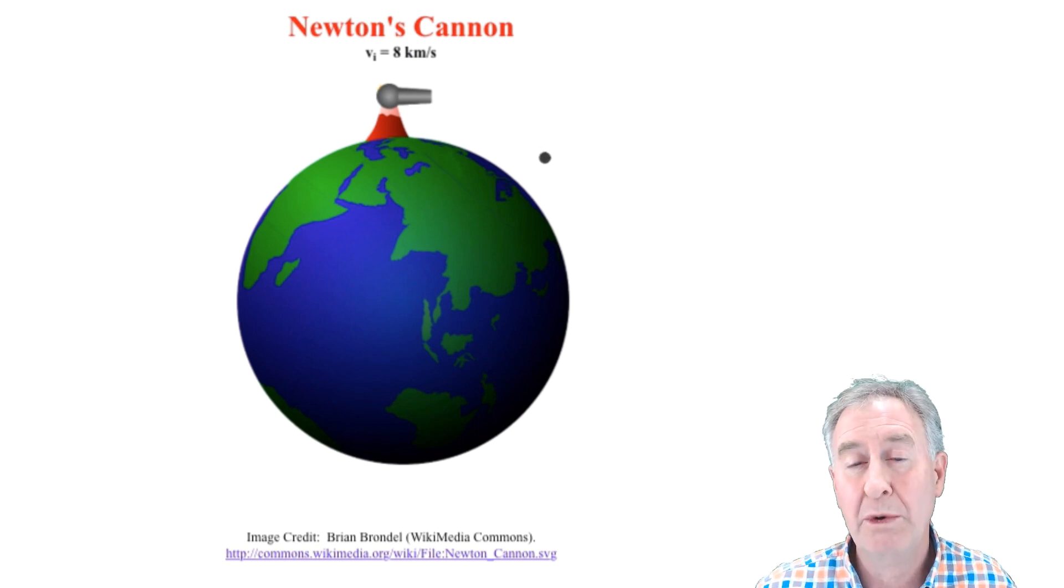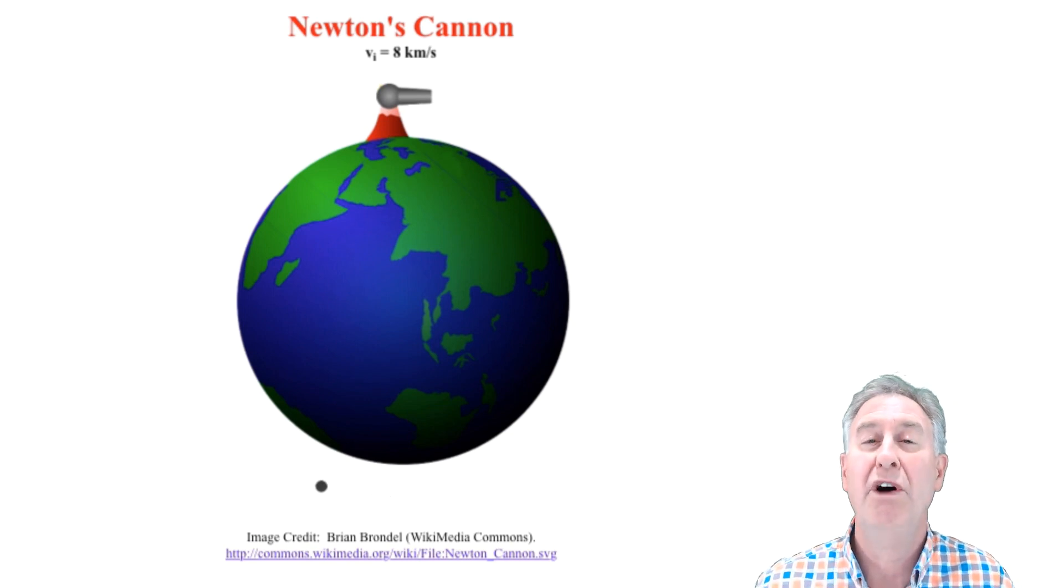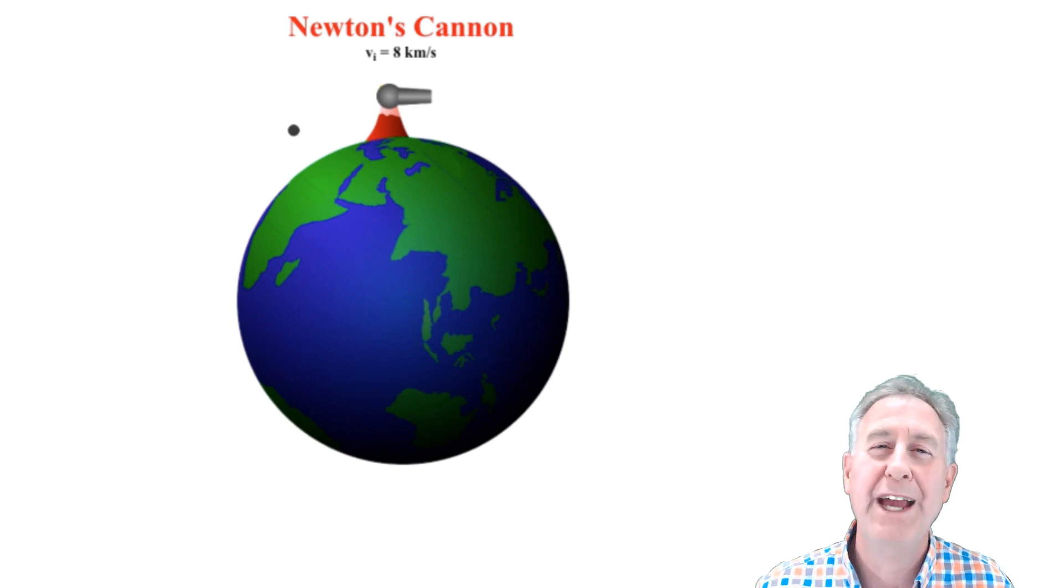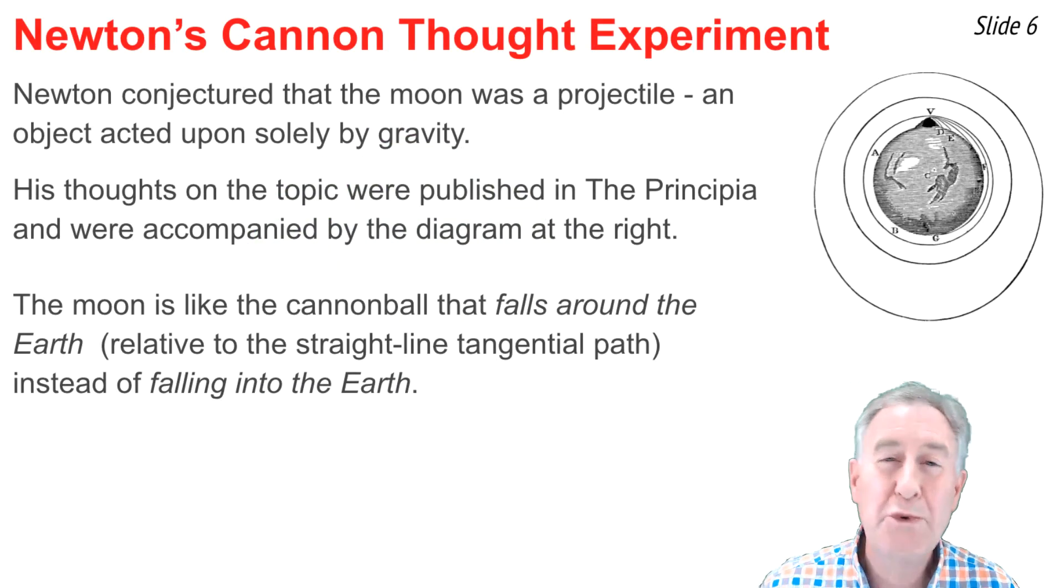Such a cannonball would continually be pulled towards the earth by the force of gravity, but never fall into the earth, because the rate at which it fell would match the curvature of the earth. For Newton, the moon is like the cannonball that falls relative to its straight-line inertial path, but it falls around the earth instead of into the earth.